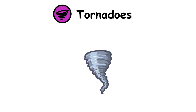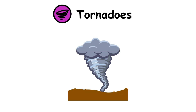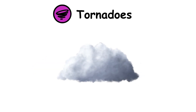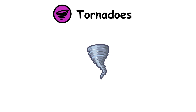Tornadoes. A tornado is a violent rotating column of air that is connected to the earth and the cumulonimbus cloud. A cumulonimbus cloud is a dense, vertical cloud, typically formed from water vapor. In rare cases, the tornado connects to a cumulus cloud, which has a flat base. Tornadoes come in many shapes and sizes. Most tornadoes have wind speeds less than 180 kilometers per hour, are about 80 meters across, and travel several kilometers before dissipating.